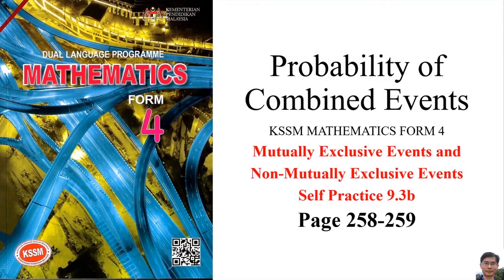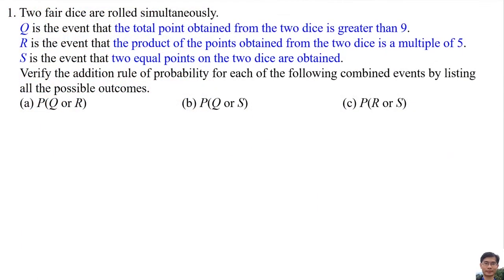Probability of Combined Events — Mutually Exclusive Events and Non-Mutually Exclusive Events. Self-Practice 9.3B, page 258 to 259. Two fair dice are rolled simultaneously. Q is the event that the total points obtained from the 2 dice is greater than 9. R is the event that the product of the points is a multiple of 5. S is the event that the 2 equal points on the 2 dice are obtained. We apply the addition rule of probability for each combined event by listing all possible outcomes.